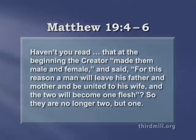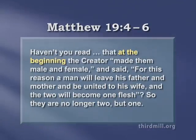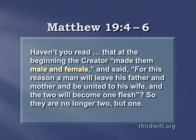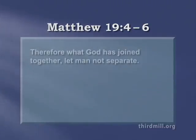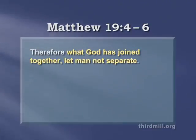Notice that Jesus drew attention to a number of particular features about important theological structures at the beginning, before sin had corrupted the created order. Referring to Genesis chapter 1 verse 27, he noted that God had made humanity male and female. Quoting from Genesis chapter 2 verse 24, Jesus said that, For this reason a man will leave his father and mother and be united to his wife and the two will become one flesh. Jesus then drew the conclusion: what God has joined together let man not separate. The original creation ordinance of marriage was that a man and a woman who married became one flesh.